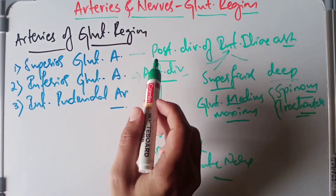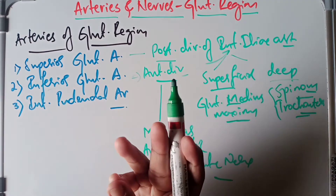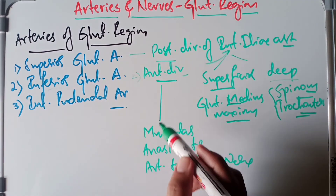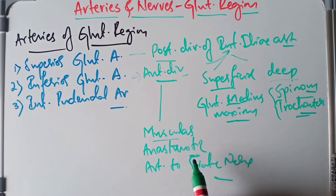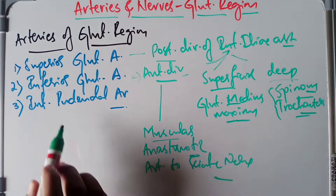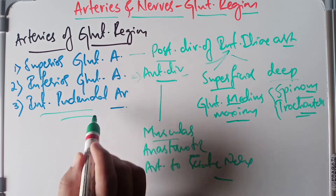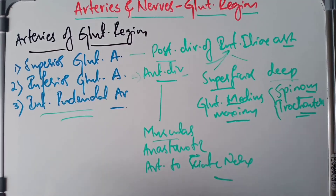The inferior gluteal artery gives three sets of branches: muscular branches, anastomotic branches, and the artery to the sciatic nerve. The third artery of the gluteal region is the internal pudendal artery. This concludes the arteries of the gluteal region.